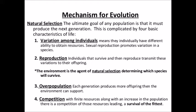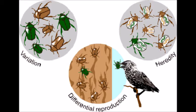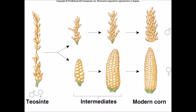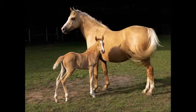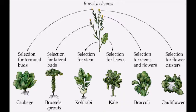Let's jump right in. First, we'll discuss the selective mechanisms: artificial, natural, and sexual selection. Artificial selection is the process whereby humans choose which organisms reproduce and pass their genes on to progeny. Examples are cows, dogs, horses, and innumerable fruits and vegetables.